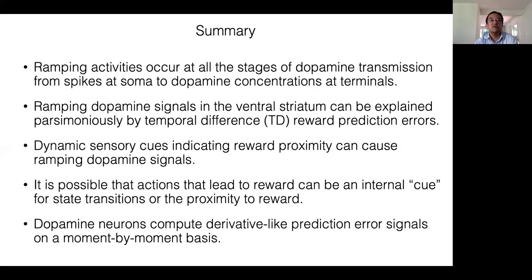Finally, dopamine neurons compute derivative-like prediction error signals on a moment-by-moment basis. This moment-by-moment computation of derivative-like signals is the hallmark of temporal difference error signals. To our knowledge, our experiment is the first empirical demonstration of this idea and unifies the computational interpretation of dopamine signals across time scales.